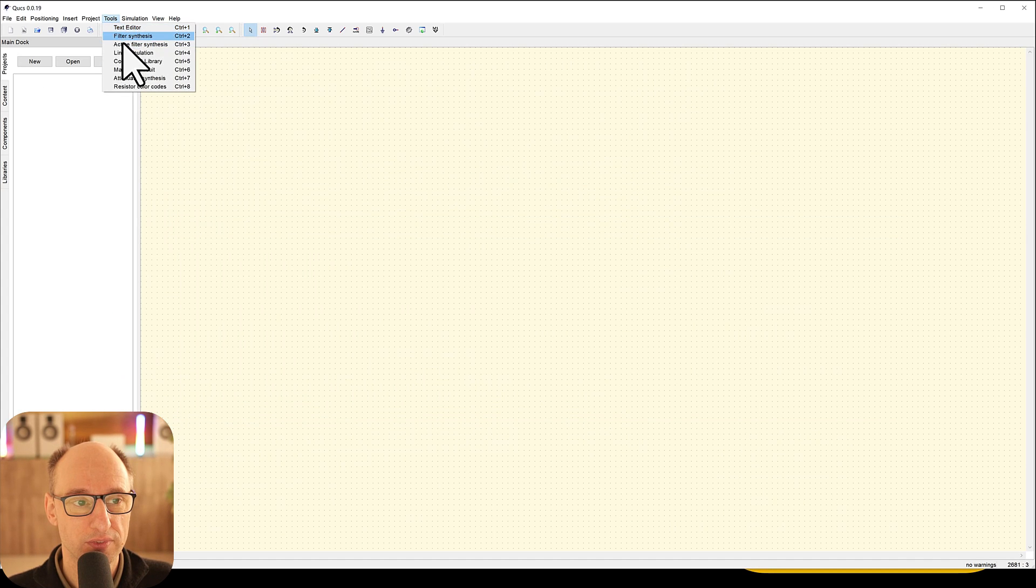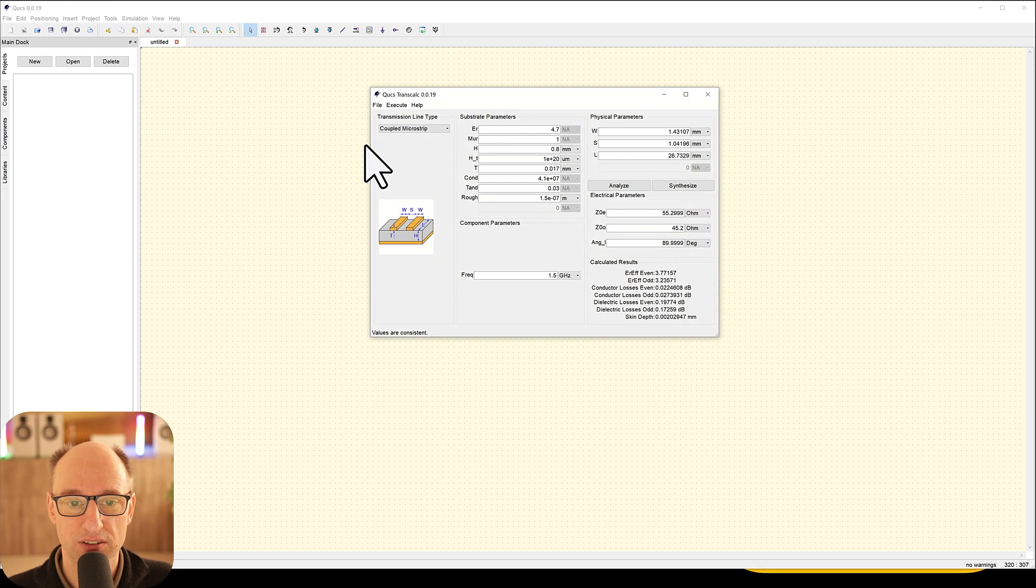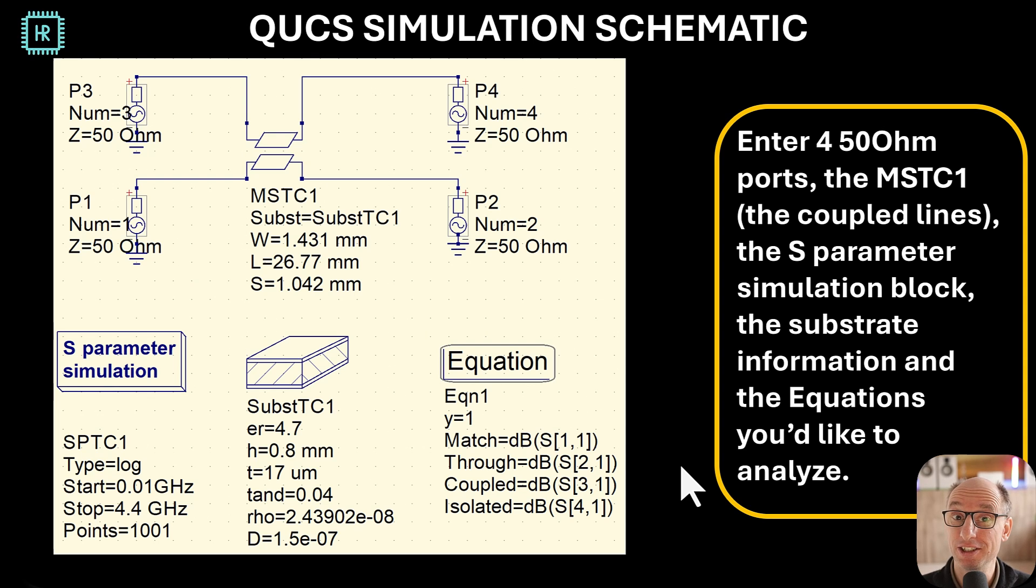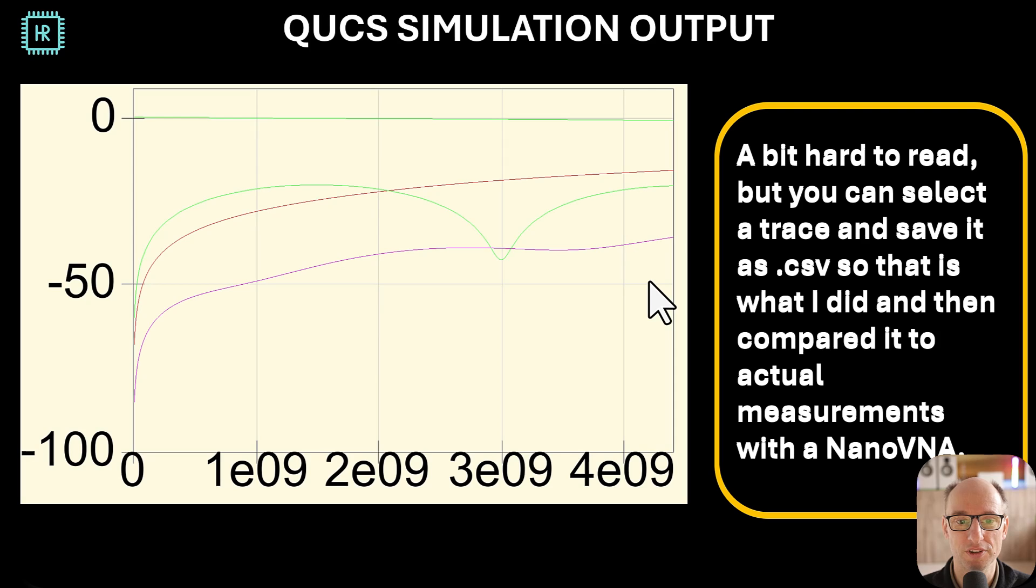Now let's show you how you can get to this specific screen. You go to tools, line calculation, and then this pops up. So the nice thing about COUX is you can also use it to simulate. Here we have the simulated schematic with the coupled lines and the four ports. This block tells you what kind of simulation you want from 0.01 gigahertz to 4.4 gigahertz with 1001 points. You have to enter the substrate information which is basically your dielectric. And you have to tell what kind of measurements you want it to simulate. So S11 means the match. S21 means the gain from here to here. S31 means the gain from here to here. And S41 means the gain from here to here. So this is the result that comes out.